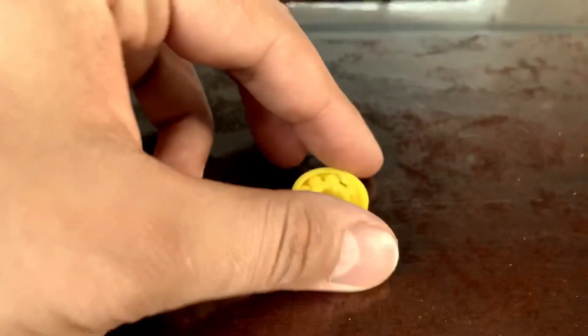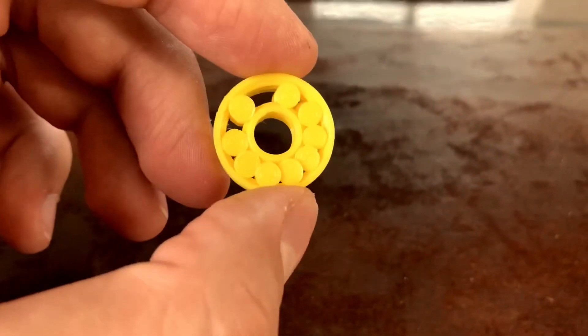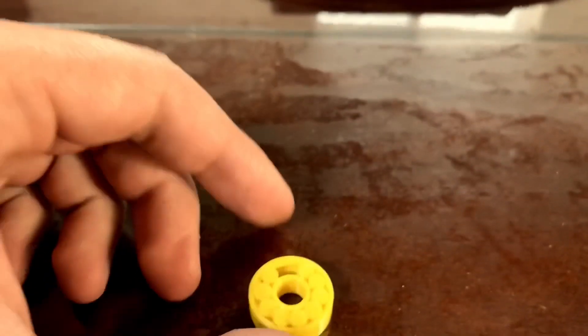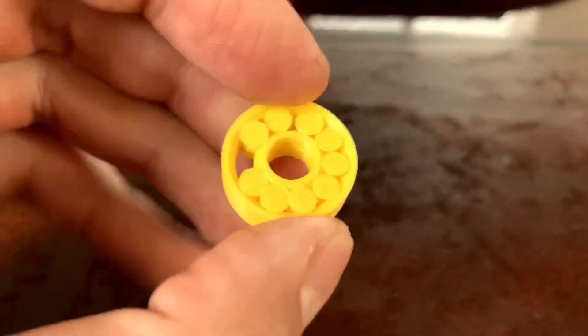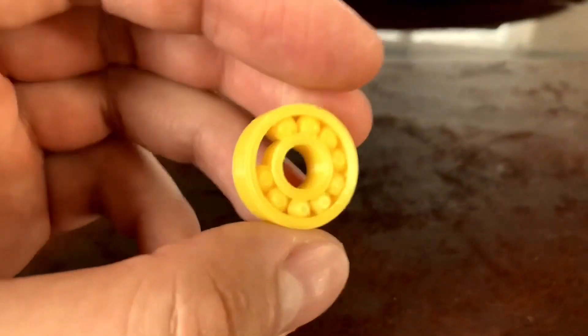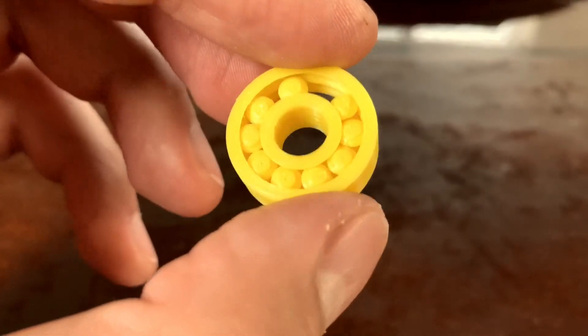But yeah, version three, this is what you guys all came for, right? This thing is fully functional. It's a replacement 608 bearing. It has a 22 millimeter outer, 8 millimeter bore, and it's 7 millimeters wide. So you guys can print this at home right now. You don't have to wait for shipping from China or any other place, and you can work it with your project.